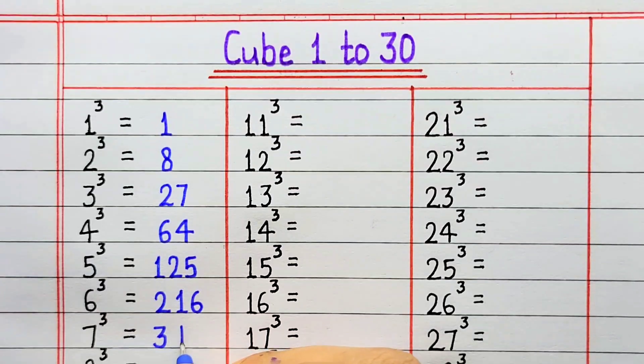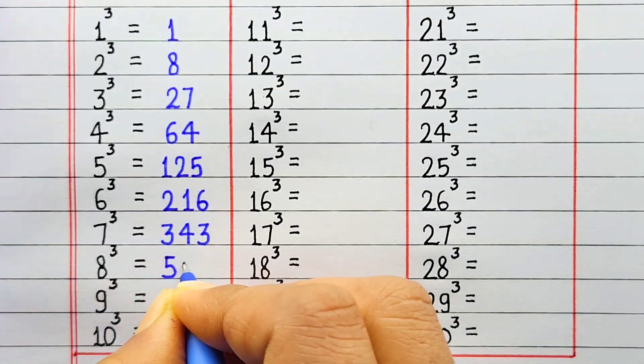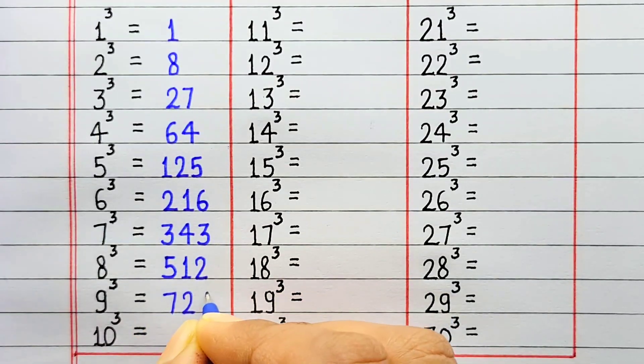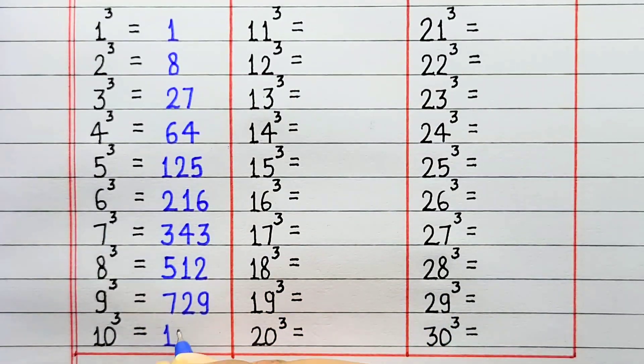Cube of 7 is 343. Cube of 8 is 512. Cube of 9 is 729. Cube of 10 is 1000.